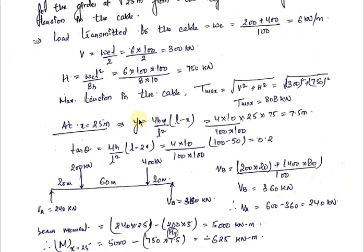The equation of Y for a parabola is: Y = 4h × x(L − x) / L². Putting x = 25 meters, the value of Y comes out to be 7.5 meters. We also need the value of tan θ to find the shear force. tan θ = dy/dx = 4h/L² × (L − 2x). After putting in the values, tan θ comes out to be 0.2.